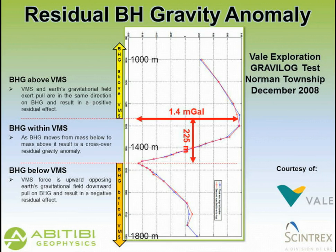When the sensor is above a target — above a heavy mass — the attraction of that mass combined with the Earth's gravitational field is positive. When you subtract the Earth's gravitational field through corrections, you have a positive residual anomaly. Below the mineralization, you subtract the Earth's gravitational field and you're left with a negative anomaly — the pull of the mineralization on the spring in the sensor is upwards. As you go from the positive to the negative, you have a crossover, so that residual zero is where the crossover anomaly occurs.